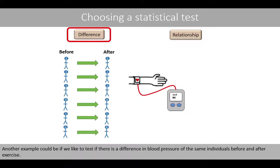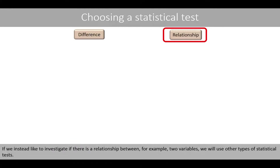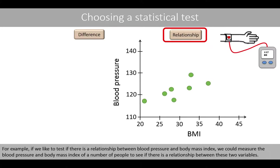Another example could be if we'd like to test if there is a difference in blood pressure of the same individuals before and after exercise. If we'd like to investigate if there is a relationship between two variables, we will use other types of statistical tests. For example, if we'd like to test if there is a relationship between blood pressure and body mass index, we could measure both of these variables for a number of people.